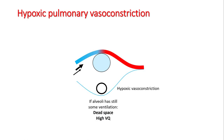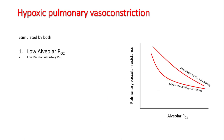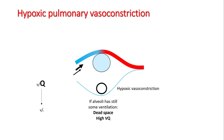Hypoxic pulmonary vasoconstriction is a very effective way of reducing blood flow to a non-functioning alveolus. The body diverts blood flow from this alveolus to a normal one by a process called hypoxic vasoconstriction. If ventilation in this alveolus is still present, it will now present as a high VQ area or dead space. A shunt-like physiology with high perfusion and low ventilation turns into a relative high VQ ratio as Q becomes much smaller than V.